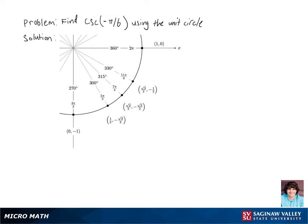Let's find cosecant of negative pi over 6 using the unit circle. First, we will travel a distance of pi over 6 counterclockwise on our unit circle.